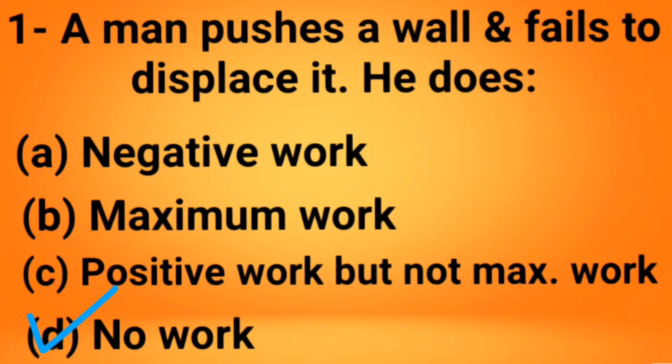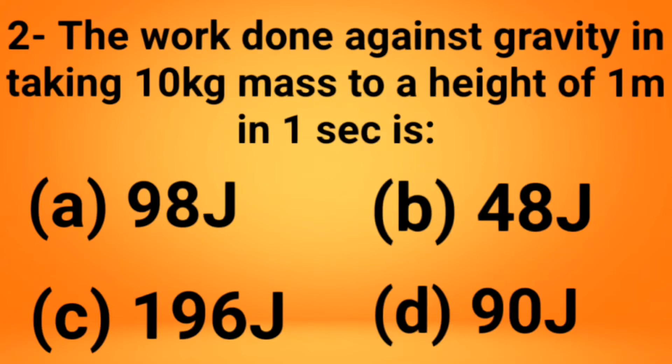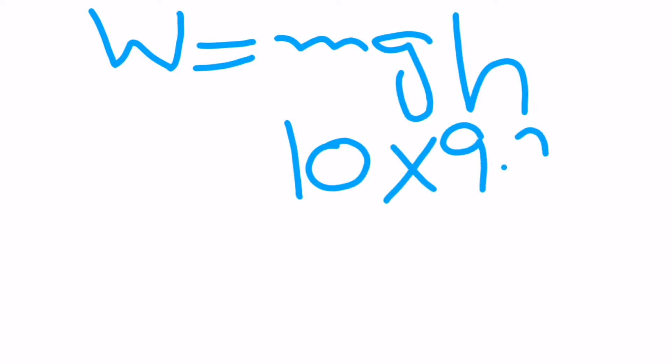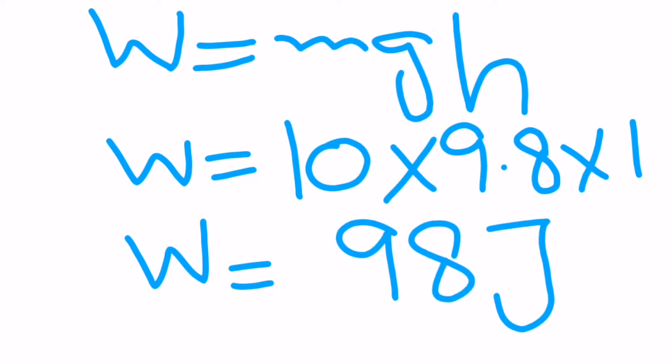The second MCQ: The work done against gravity in taking 10 kg of mass to a height of one meter in one second is? We're going to use the formula W = mgh. The mass given to us is 10, gravity is 9.8, and the height given to us is one meter. When we multiply it, we get the answer 98 joules. So the answer to that question is option A, 98 joules.